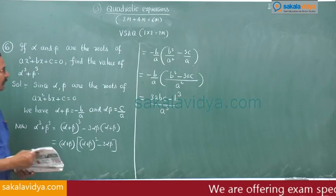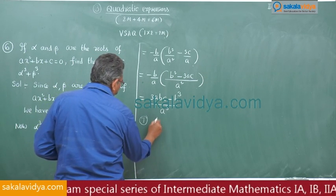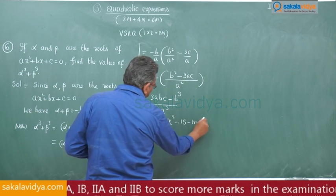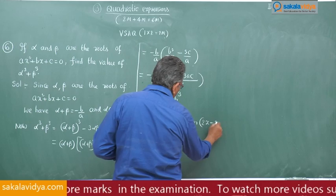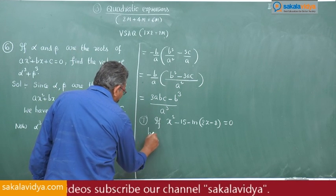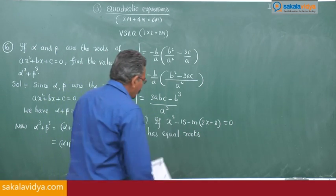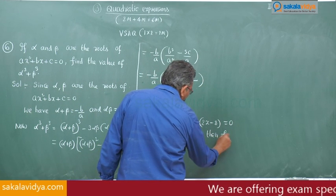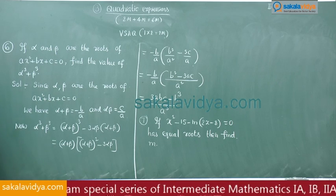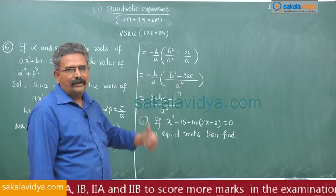That is problem number 7. If x squared minus 15 minus m of 2x minus 8 is equal to 0 has equal roots, then find m. If this quadratic equation has equal roots, then we have to find out the undetermined value m.